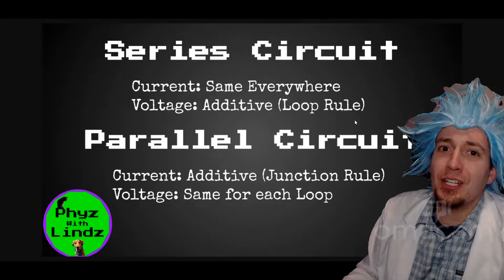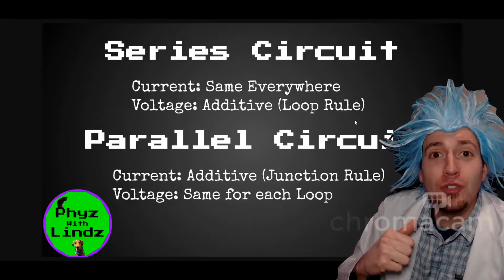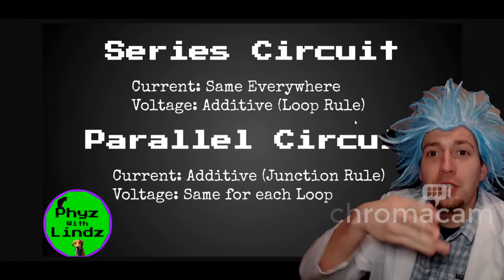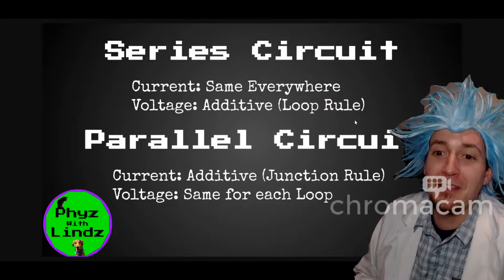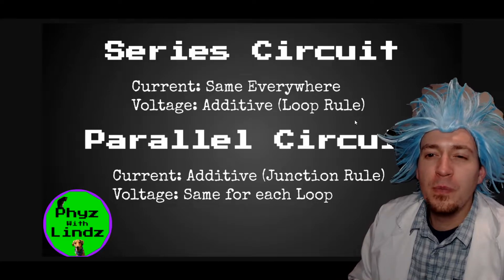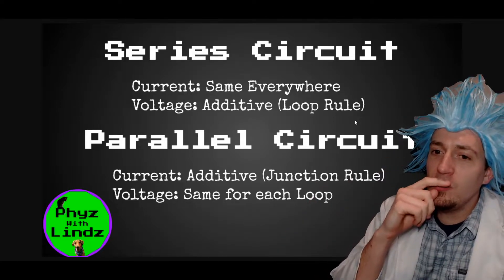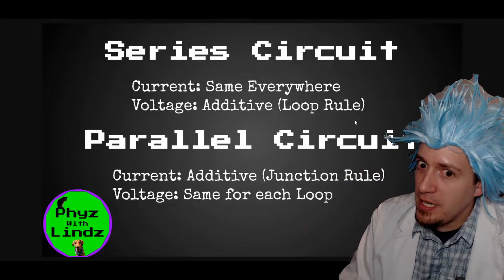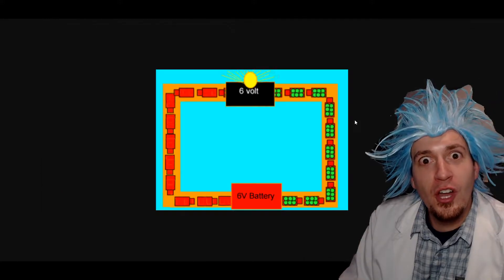For parallel circuits, we're getting that the current is additive, and that's something called junction rule. All the electrons coming into a junction must equal to all the electrons leaving the junction. But voltage is the same for each loop, which is the same as loop rule. These are interesting rules. If only there was an animation that would help us further describe this.